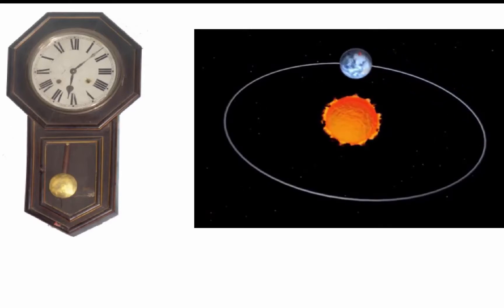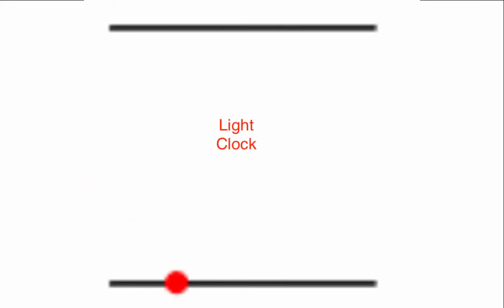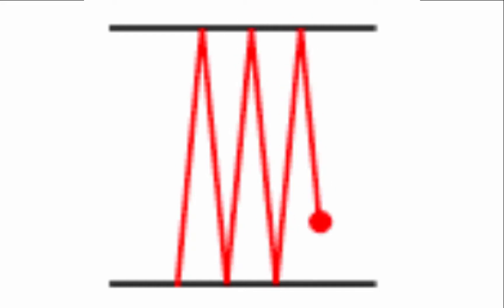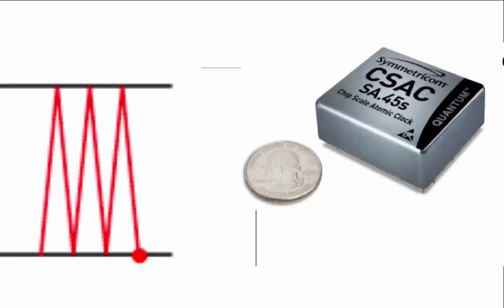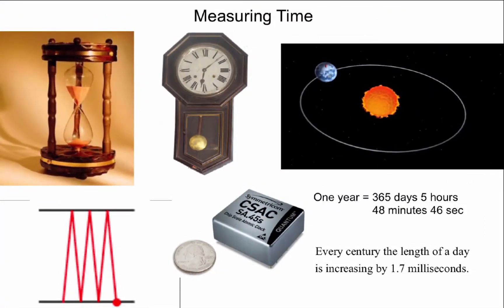A much better clock is a natural one: it takes 365 days, 5 hours, 48 minutes, and 46 seconds for the Earth to complete one full revolution around the sun. Here's another kind of clock — I'll call it a light clock. Imagine two mirrors; a particle of light, that is a photon, is emitted from the bottom, goes to the top, is reflected, and is constantly shuttling back and forth. If we know the distance between the two mirrors very accurately and we know the speed of light, we'll know how many times in a second this photon oscillates. In fact, this kind of clock can be put on a chip, and these days atomic clocks are the most accurate of all. Using an atomic clock, we can actually see that the Earth is slowing down as it rotates about its axis — in every century the length of a day is increasing by 1.7 milliseconds.